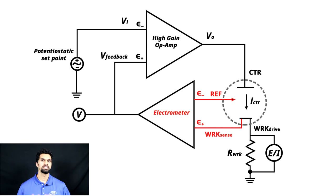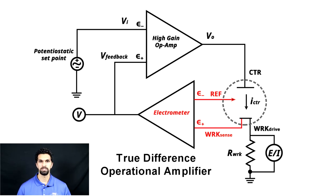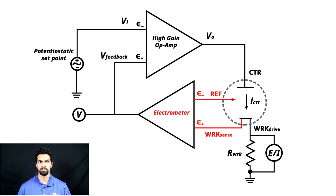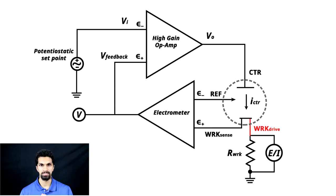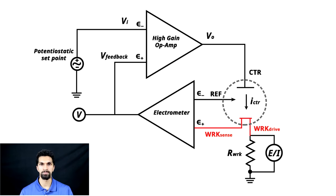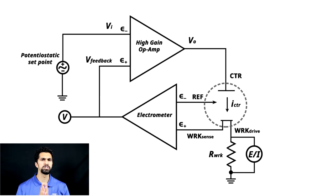The reference electrode lead and the working sense lead are connected to the inverting and non-inverting inputs of a low-gain operational amplifier called the electrometer, also referred to as a true difference operational amplifier. The output from the electrometer goes to a voltmeter where we measure the potential, but part of the output is also fed back into the non-inverting input of the high-gain op amp. In the lower right corner, the working drive lead is shorted with the working sense lead to the working electrode, which connects to a sense resistor called R-work, tied to ground.